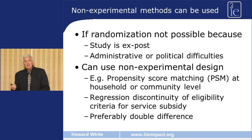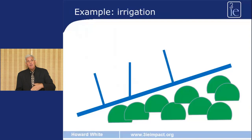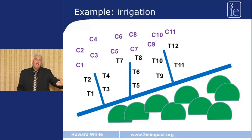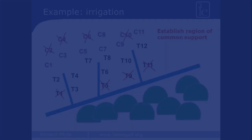Take an example of irrigation. Here we see the main canal and three secondary canals running off it, with a number of villages lying along those secondary canals which are going to be connected to the irrigation system. Where do we get our comparison group from? We can't get it from the other side of the canal because that's a hilly area with a different ecosystem, so instead we can look at villages further away from the main canal. We did a study like this in Andhra Pradesh in India, where we used villages that were to be connected to the canal in the future as the secondary canals got extended — a pipeline design. We also used propensity score matching to establish a region of common support, ensuring the villages in our comparison group were sufficiently similar to the treatment group, dropping villages from the sample that proved too dissimilar.